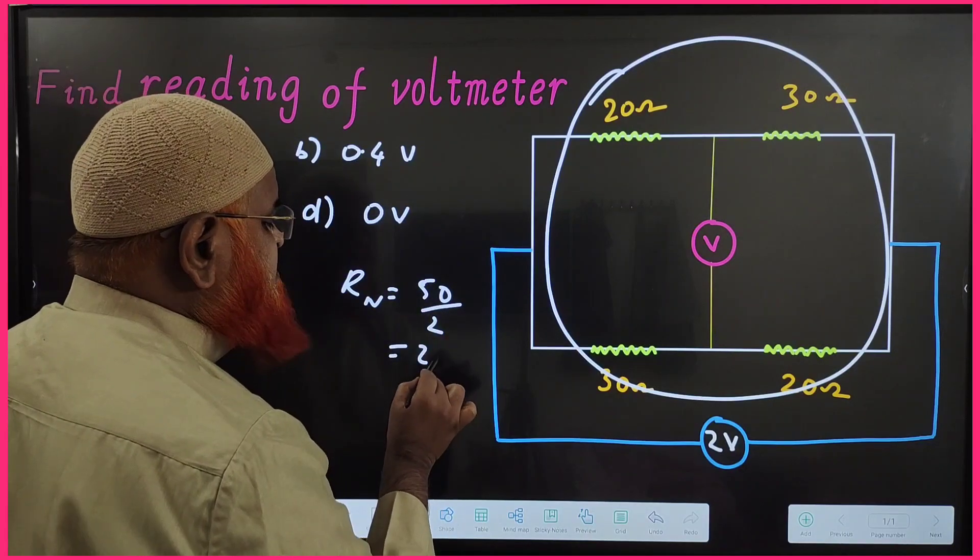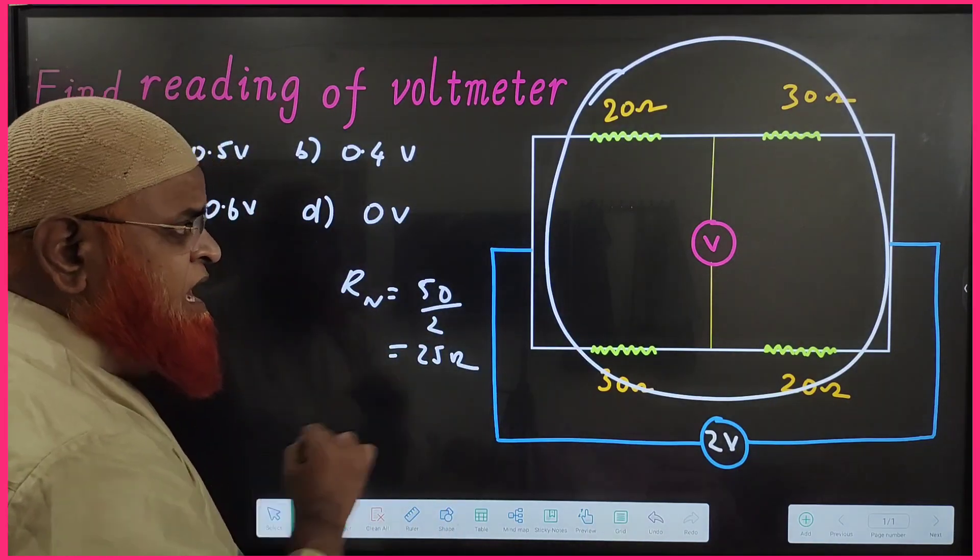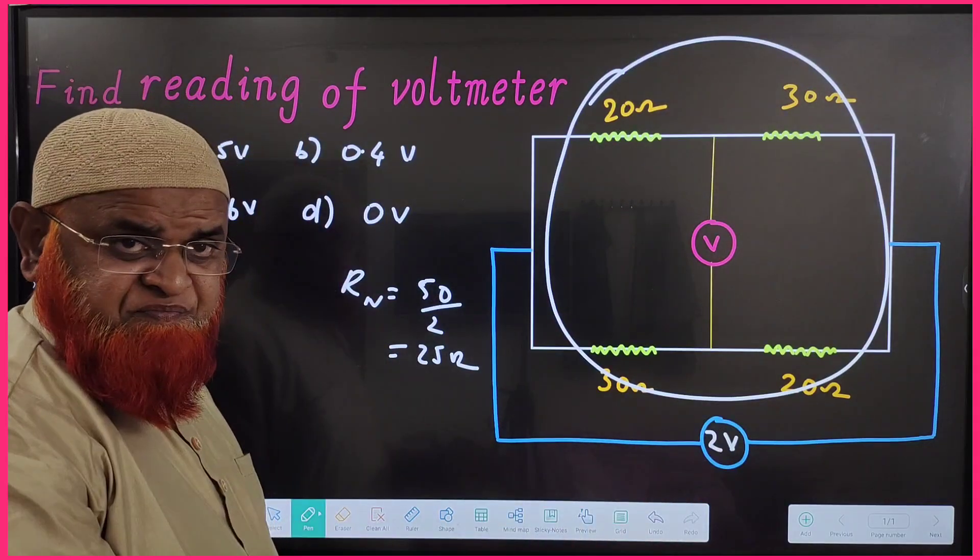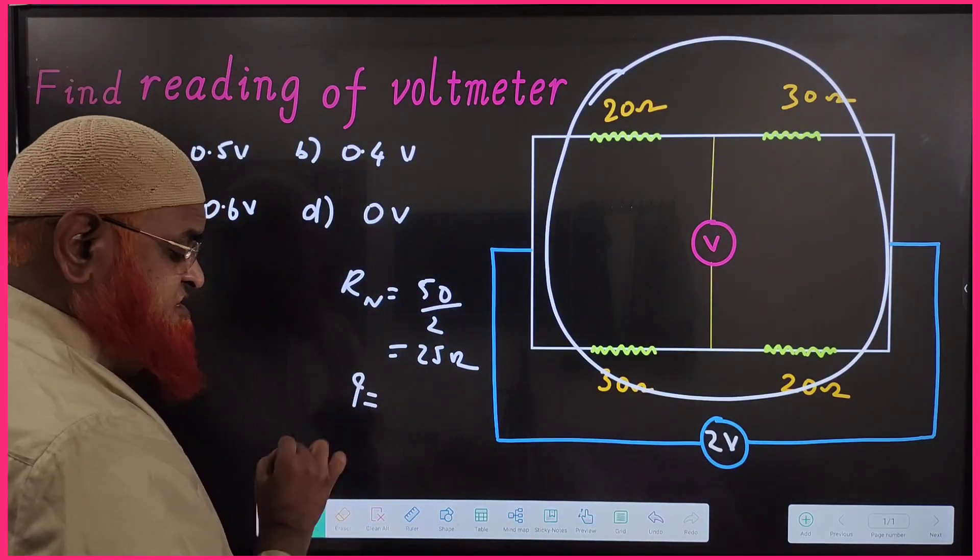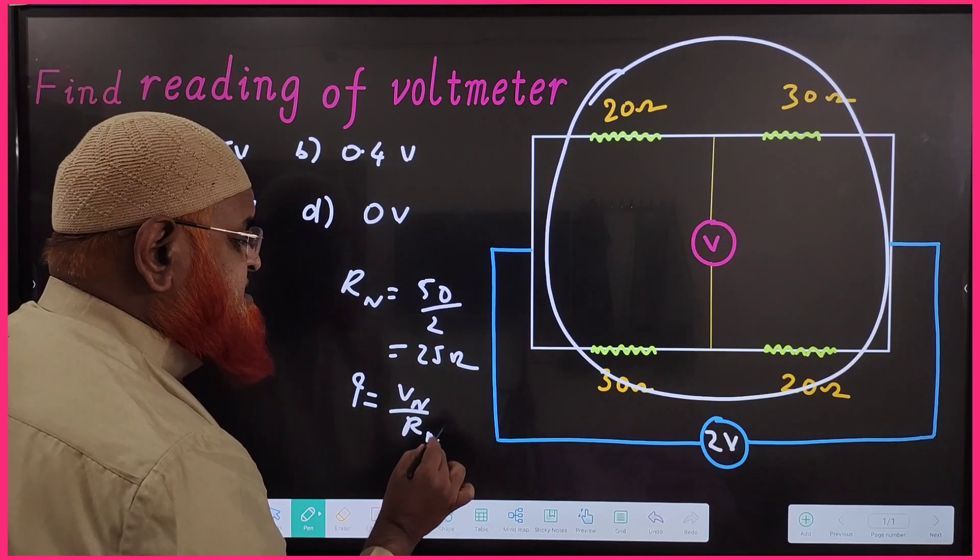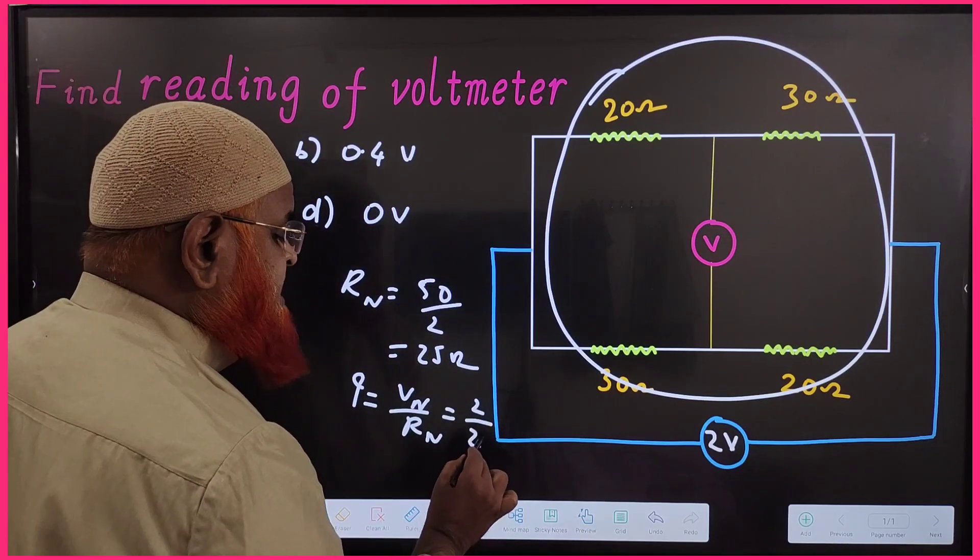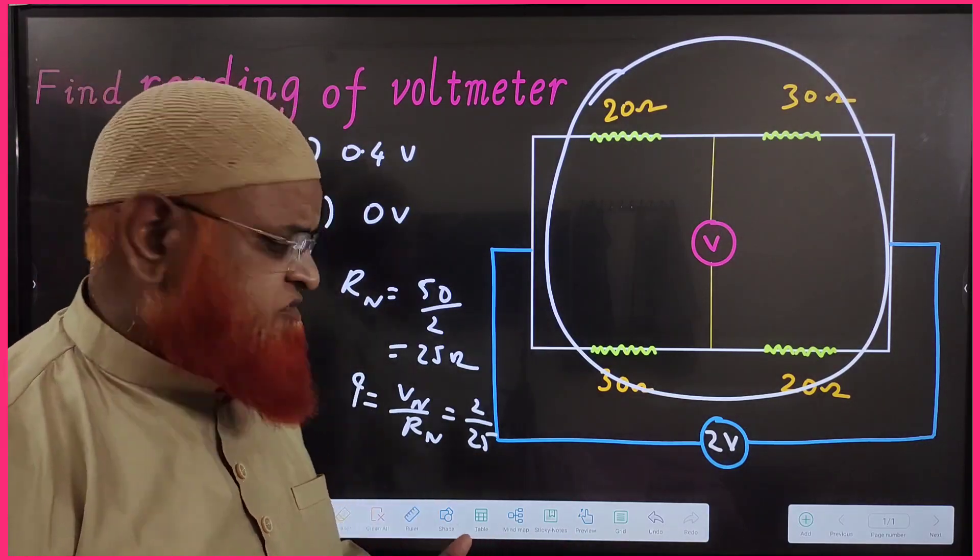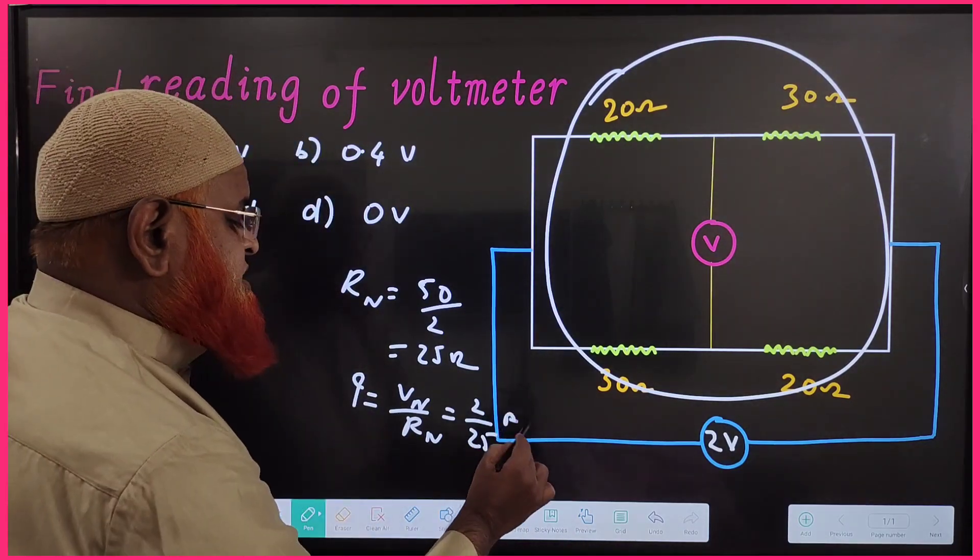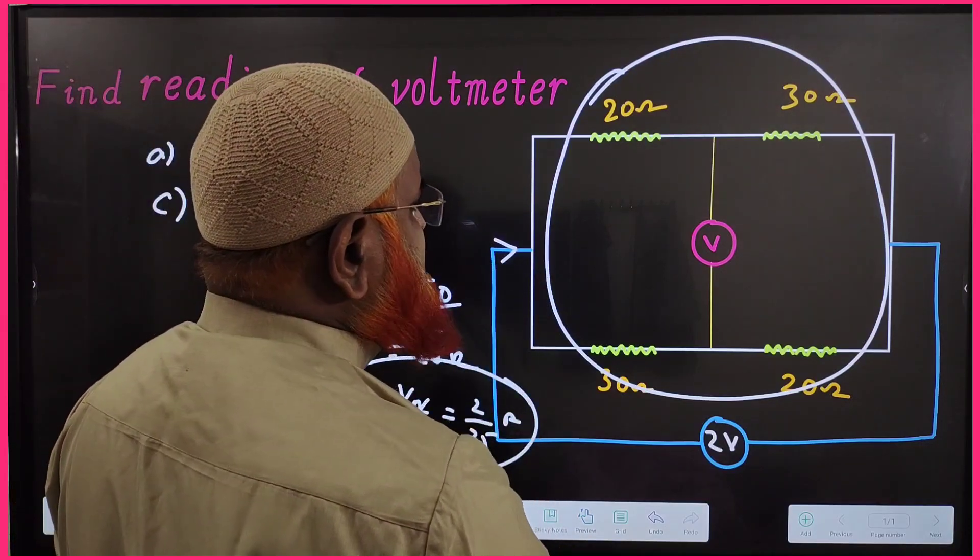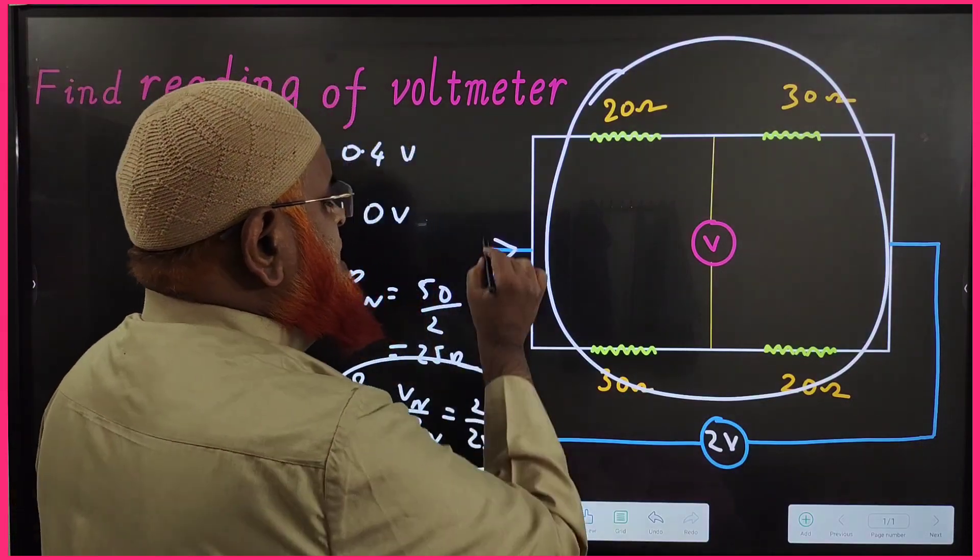We got the net resistance, we have got the net voltage, we want the net current. Net current is net voltage by net resistance, which is nothing but 2 by 25, which is 2 by 25 amperes. So in this circuit, how much current is passing? The current passing is 2 by 25 in the whole circuit.